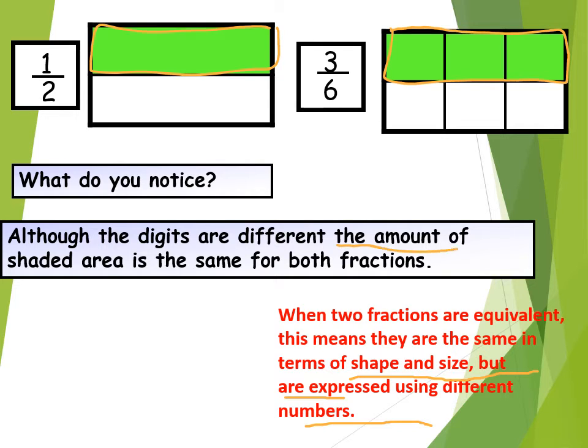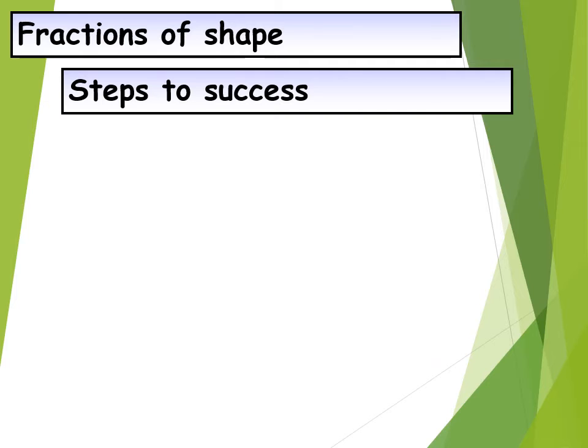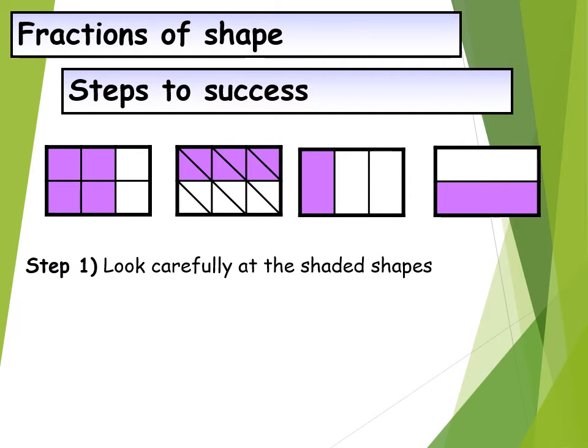Although the digits are different the amount of shaded area is the same for both fractions. So remember to focus on the amount of shaded area. Maybe the fractions, the numbers are different but still you draw the shape and see the amount of shaded area. So here I can say that 1 by 2 is equivalent to 3 by 6 because the shaded area, both you can see the same only. 6 out of 12 and 1 by 2 are equivalent. So always remember the amount of shaded area. That is what tells you whether the shapes are equivalent or not.